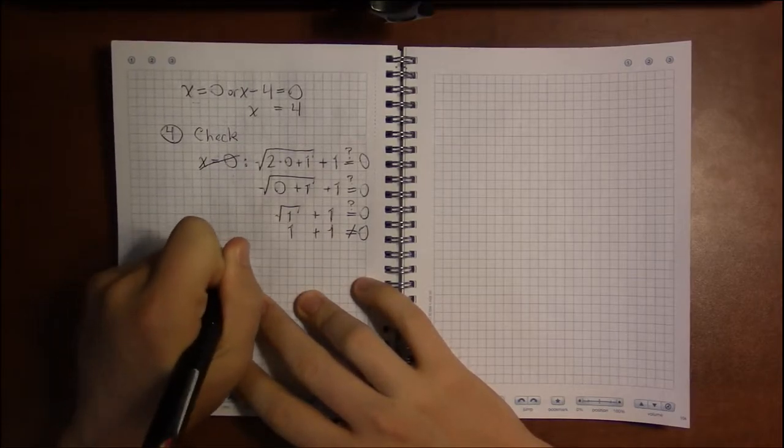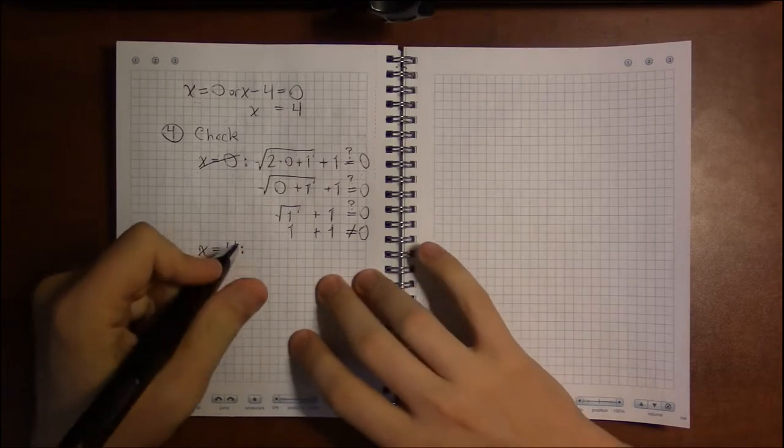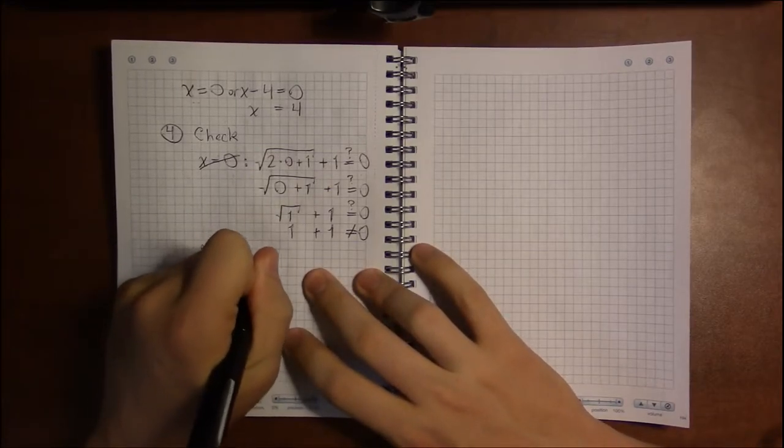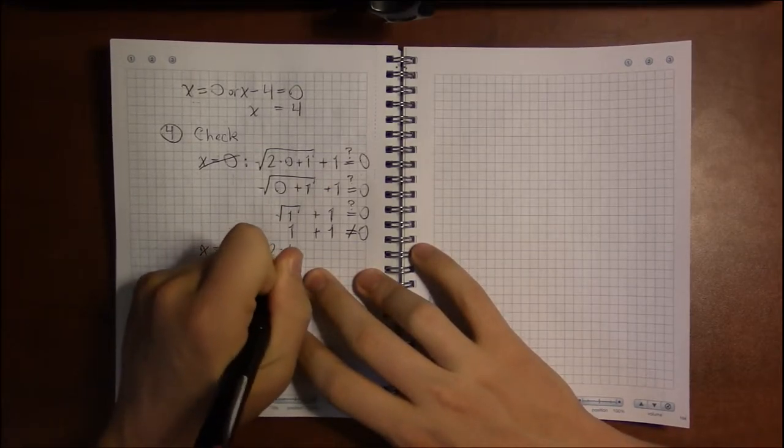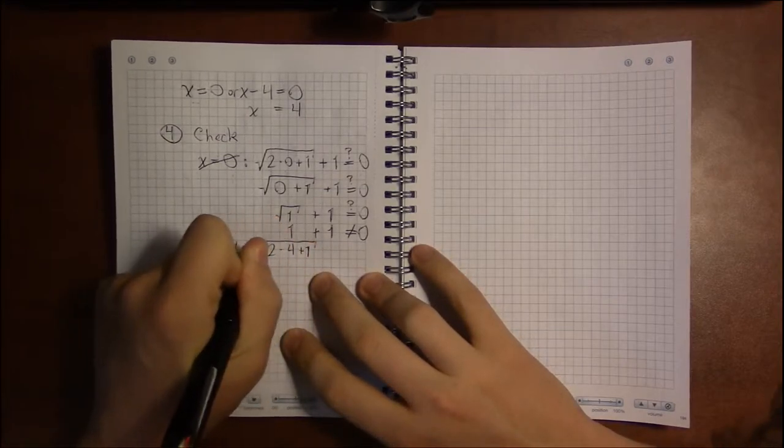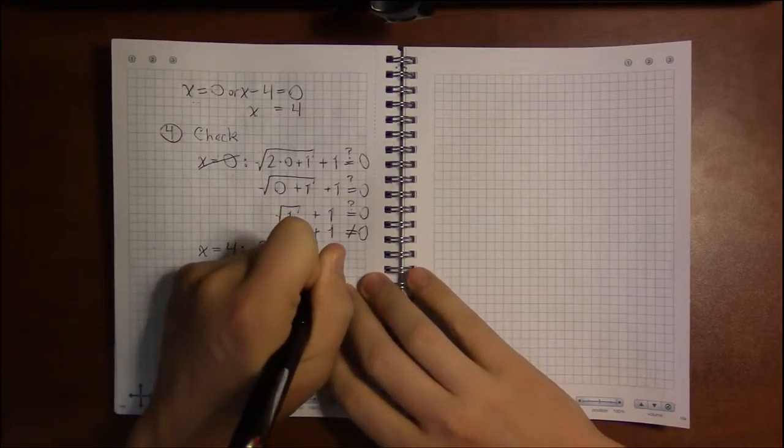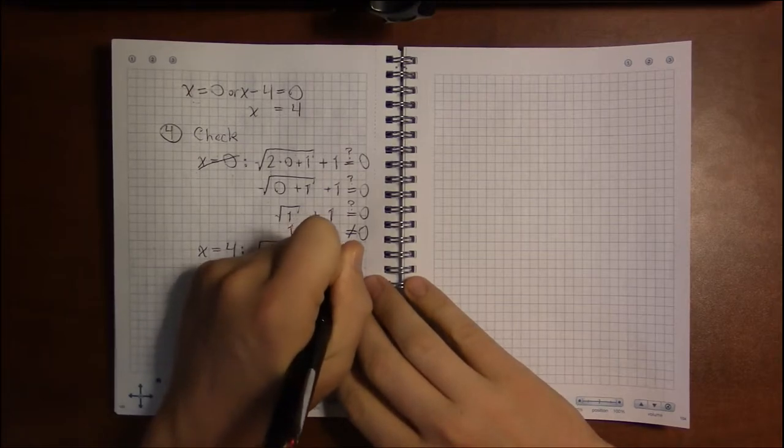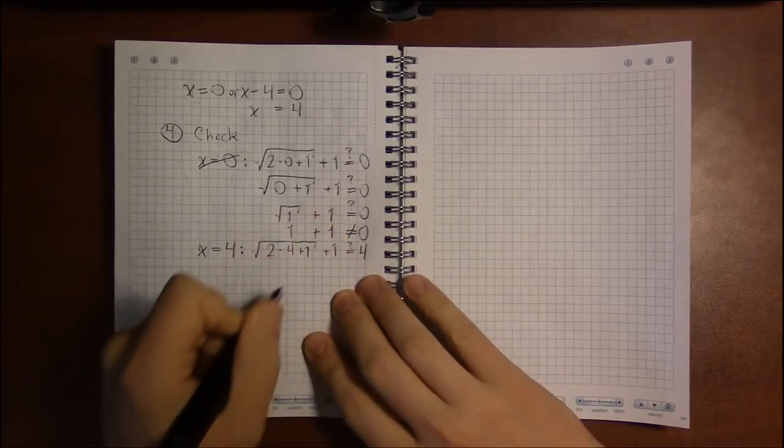Let's see if we even have one solution. Does x equals 4 work as a solution? So 2 times 4 plus 1, take the square root of all that, add 1, and hopefully we end up with 4.